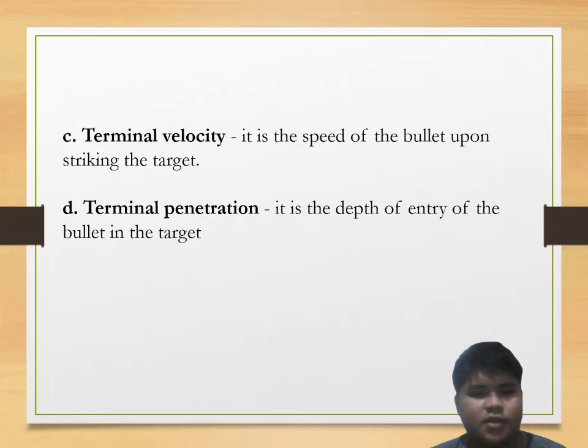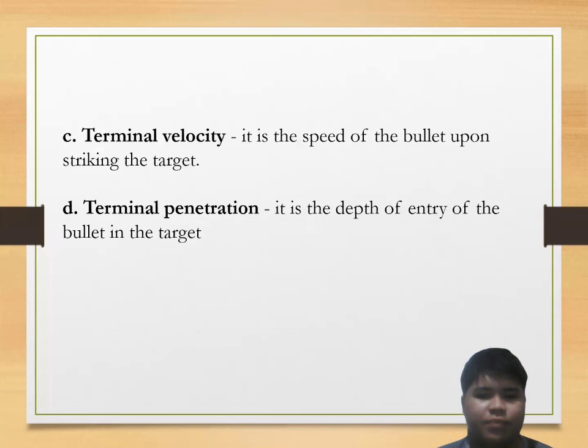Terminal velocity is the speed of the bullet upon striking the target. Terminal penetration is the depth of entry of the bullet in the target.